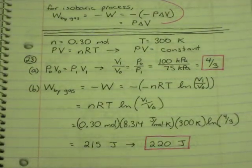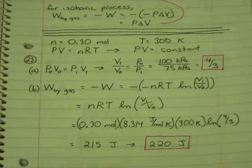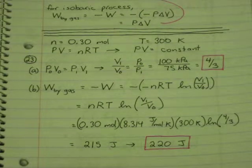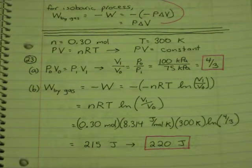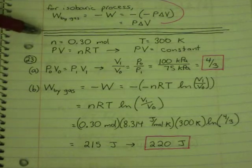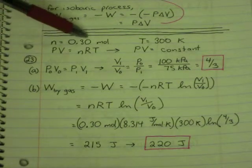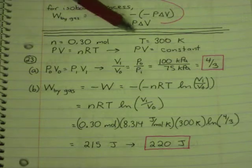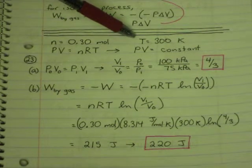Number 23. It talks about a balloon that's first mentioned in problem 22. So you have to read problem 22 to get some important details, such as that there are 0.30 moles in the balloon. It's at a temperature of 300 kelvin.